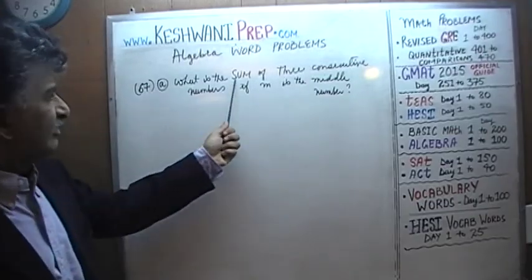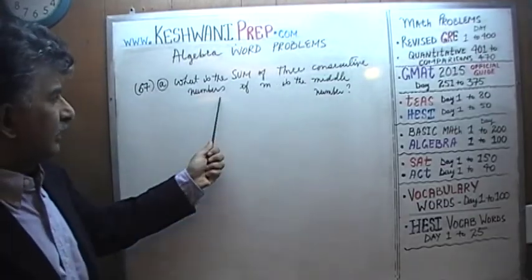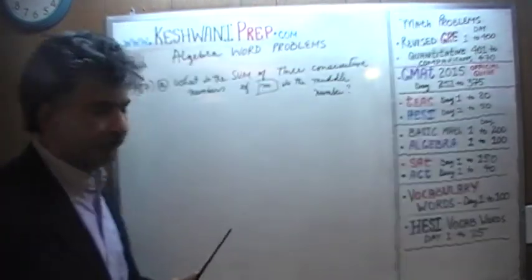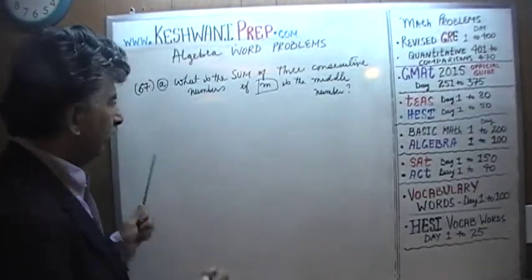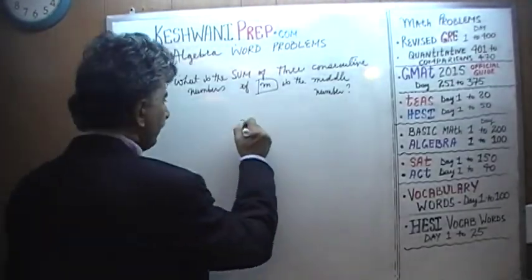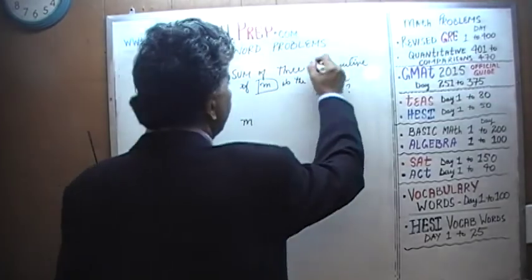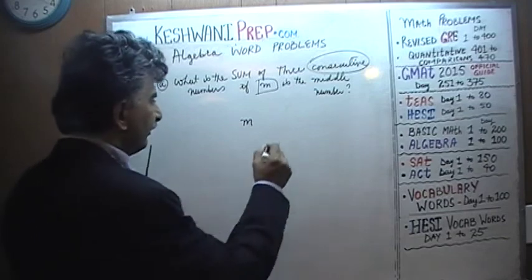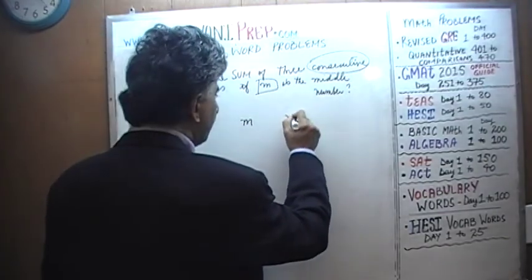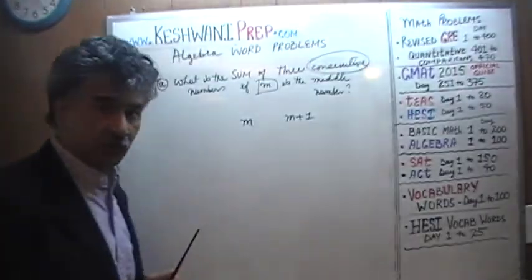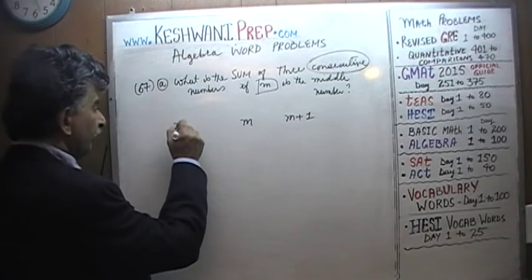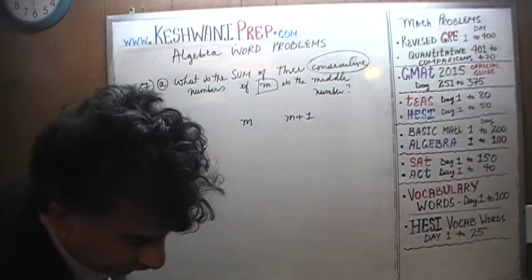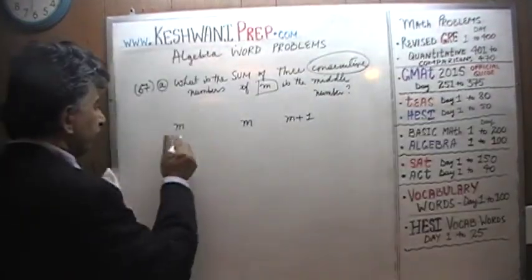The question is: what is the sum of three consecutive numbers if you have to represent the middle number with m? Well, if m is the middle number and they are consecutive — they come one right after the other — then the one that comes after m is going to be one more than that, and the one that comes before is going to be m minus one.